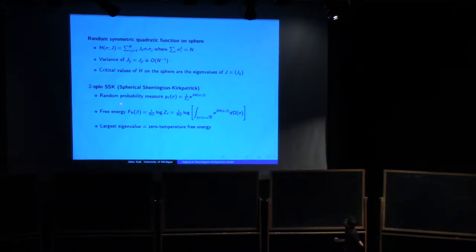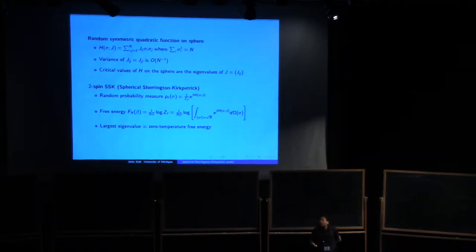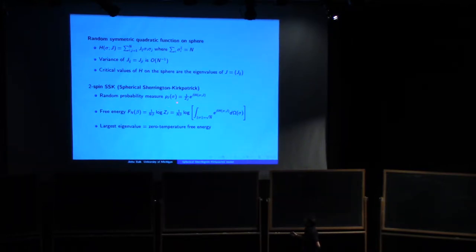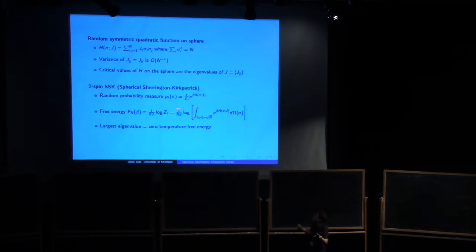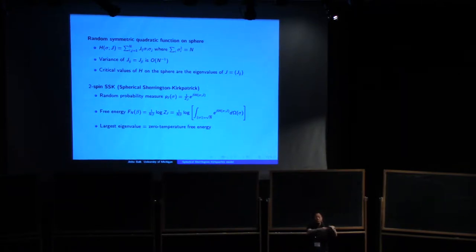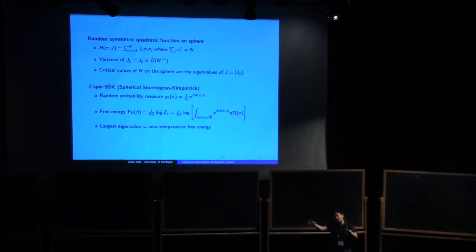The two-spin SSK model is defined as the following random measure. Given J — taken as random but fixed — you put a measure on the sphere defined by the Gibbs measure: e to the beta times the Hamiltonian H, divided by the partition function. If you fix J this is a certain measure, but as J changes, the measure changes. The behavior of spins changes depending on how you choose J. The question is: what is the average over the spin or over J, and how do the spins behave? That is the subject called spin glass.